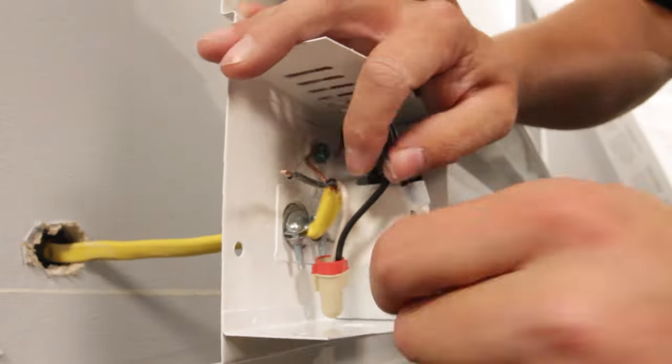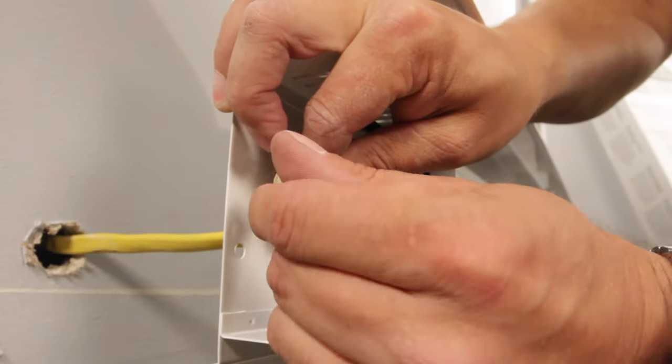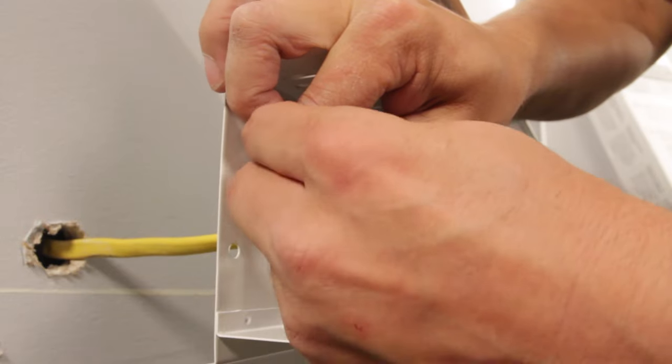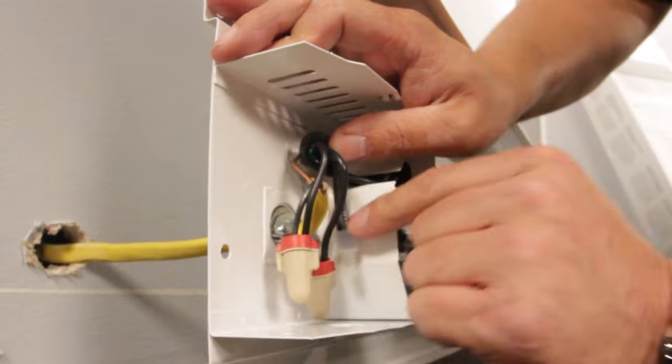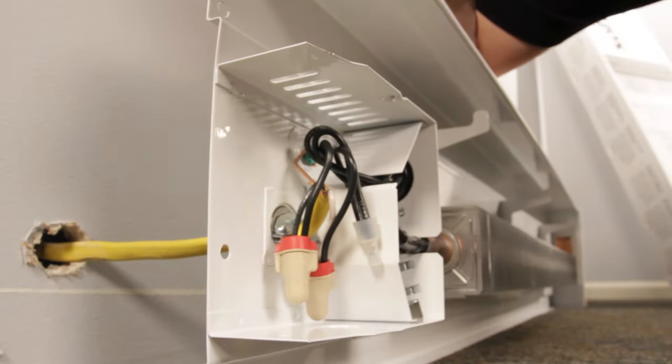Now take the black supply wire coming from the wall and wire it to the remaining black wire coming from the heater. This Cadet soft heat is not polarity sensitive so it doesn't matter which supply wire attaches to the black wires in the heater.